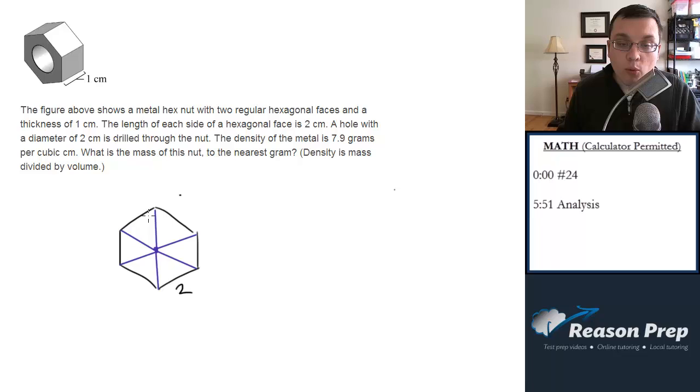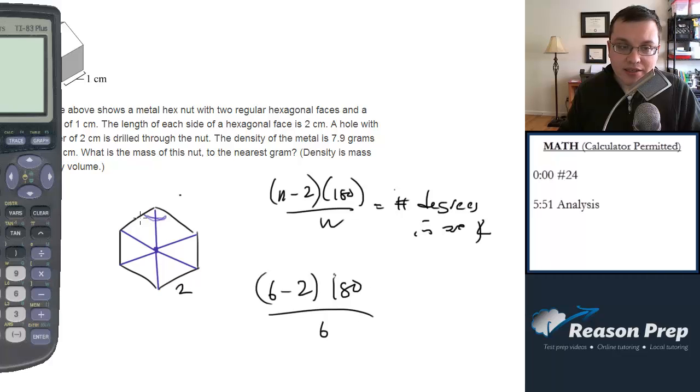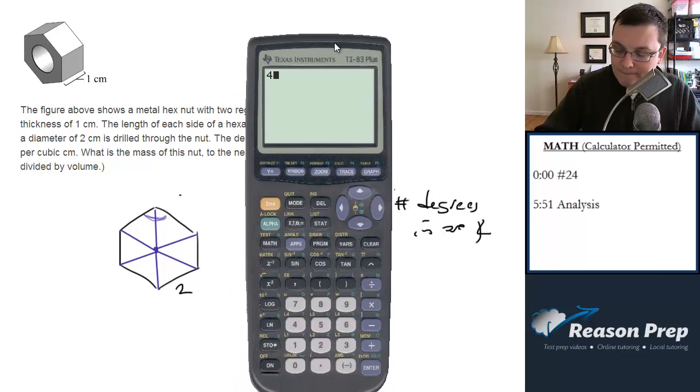To find that, you need to know this equation: n minus two times 180 all over n. This is the number of degrees in one angle of a regular polygon. So n is six here, so we're going to do six minus two times 180, and divide this by six. So it's four times 180 divided by six, which is 120.